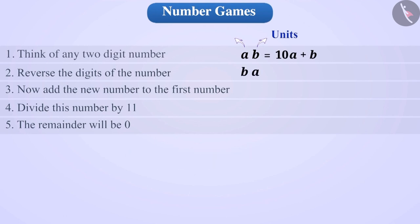When we reverse the digits, we get the number BA in which B is the digit in the tens place and A is in the units place. We can write BA in general form as 10B plus A.